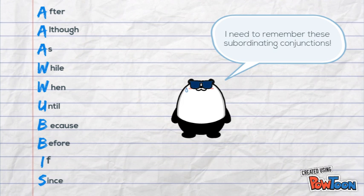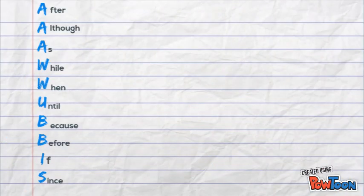Complex sentences use a really cool tool called AAAWWUBBIS. It starts with words like: although, after, as, while, when, until, because, before, if, since. These are all important subordinating conjunctions that you need to know.